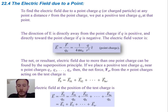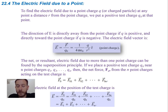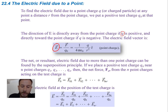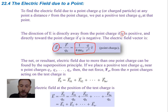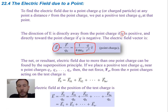The electric field due to a point charge Q, or charged particle, at any point a distance R from the point charge: we place a positive test charge Q0 at that point. The direction of E is directly away from the point charge if Q is positive, and directly toward the point charge if Q is negative. The electric field vector is E equal to F divided by Q0, which equals 1 over 4πε₀ times Q over R squared — the same as the electric force equation but with just one Q instead of two.